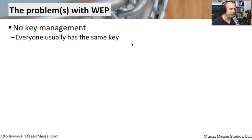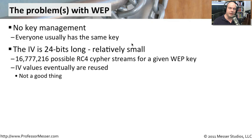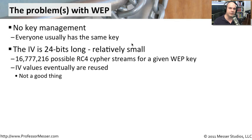Another problem, more in the details of the cryptography, is that the initialization vector is only 24 bits long. In the big scheme of things, that's a relatively small number — you only have just over 16 million different possible iterations for an initialization vector. This means that once a lot of data goes over the network, it's very common to see the same IV crop up again. If you can get two data streams using the same initialization vector — and since the IV is sent in the clear — you can start comparing those two encrypted data streams to determine the key used underneath.